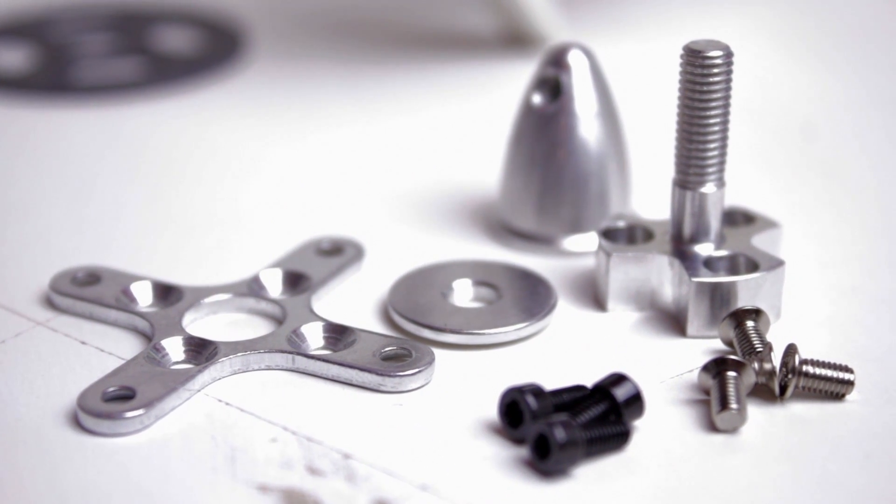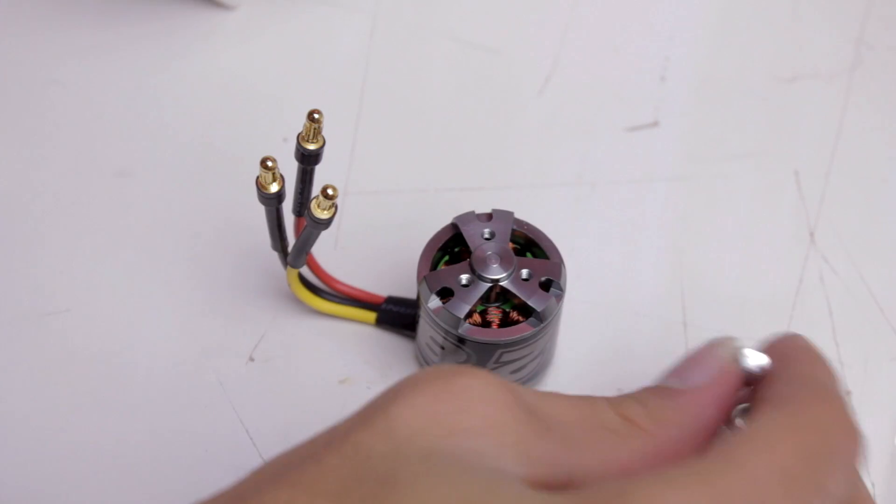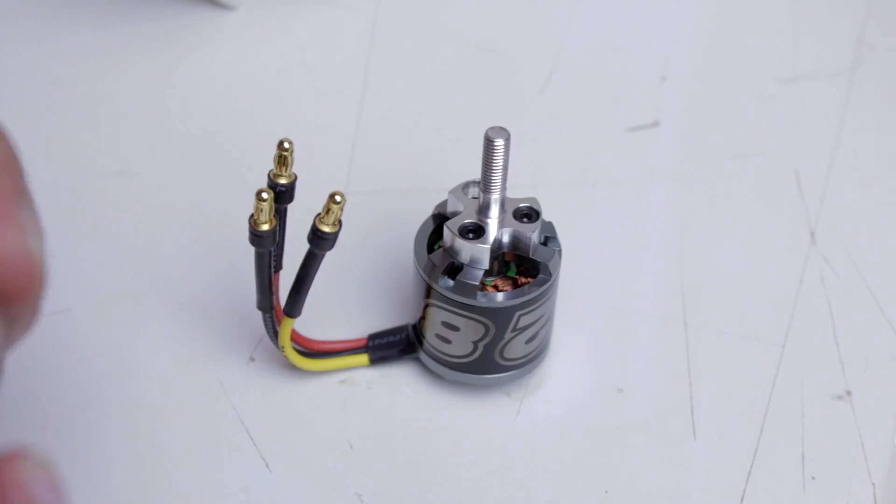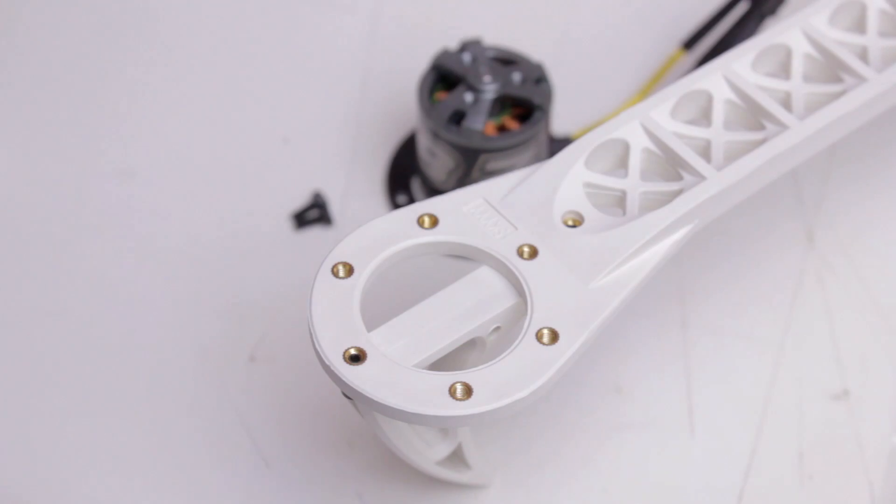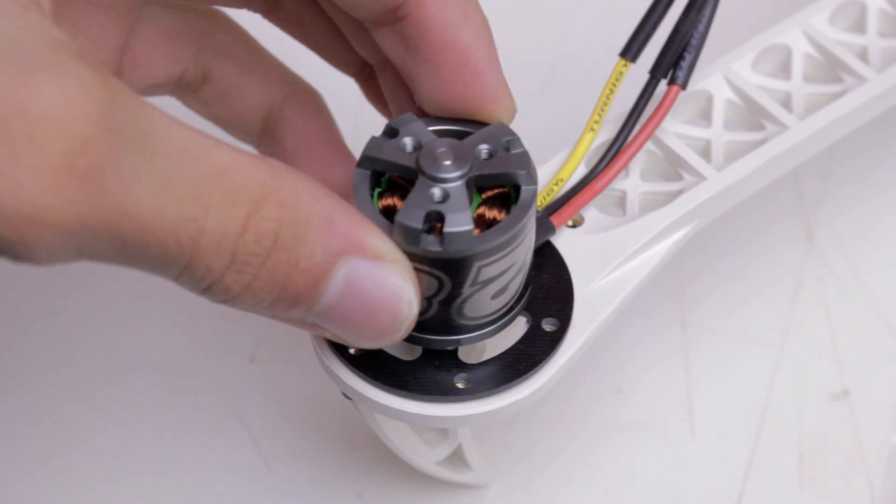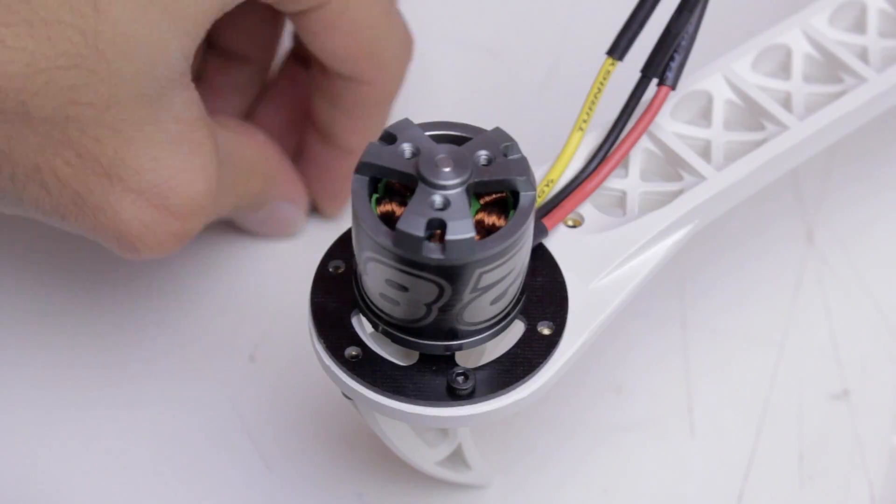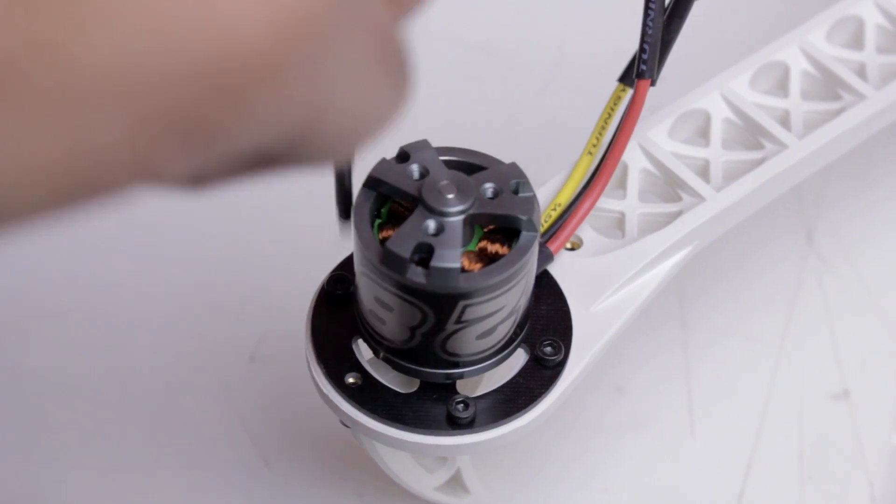Now we're going to mount the prop adapters onto the motors. There's three hex screws here and those are also from the accessory pack. Now that we're done with that we can mount the motors to the arms with the screws that came with the frame. If the holes on the mounting plates don't match the frame, then the mounting plates are upside down.